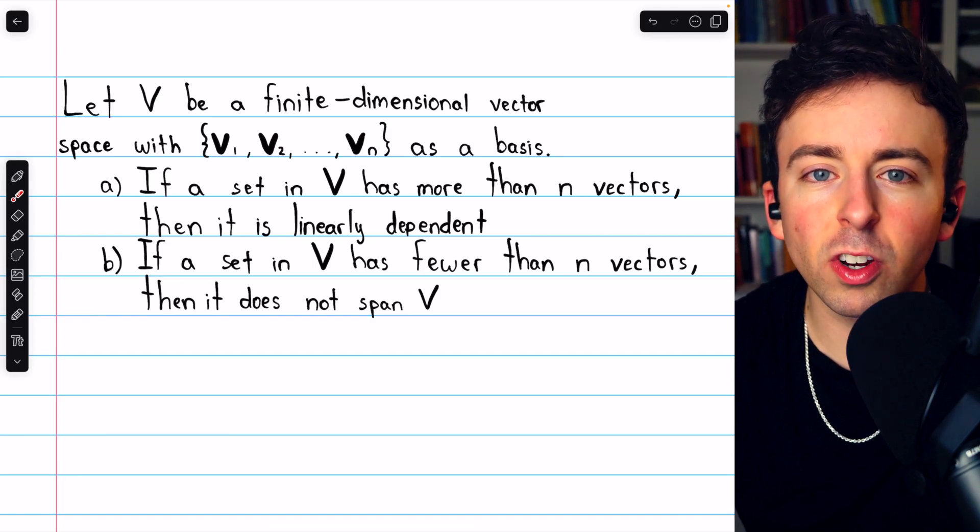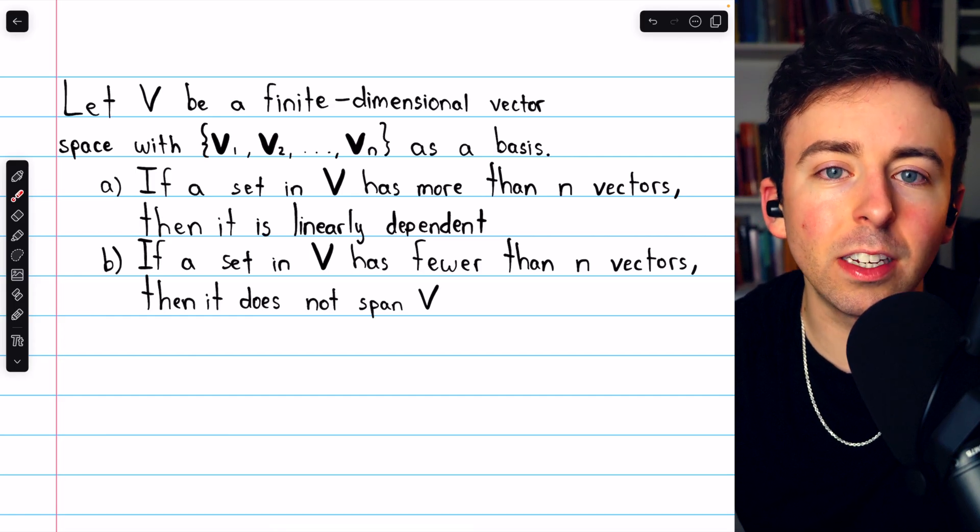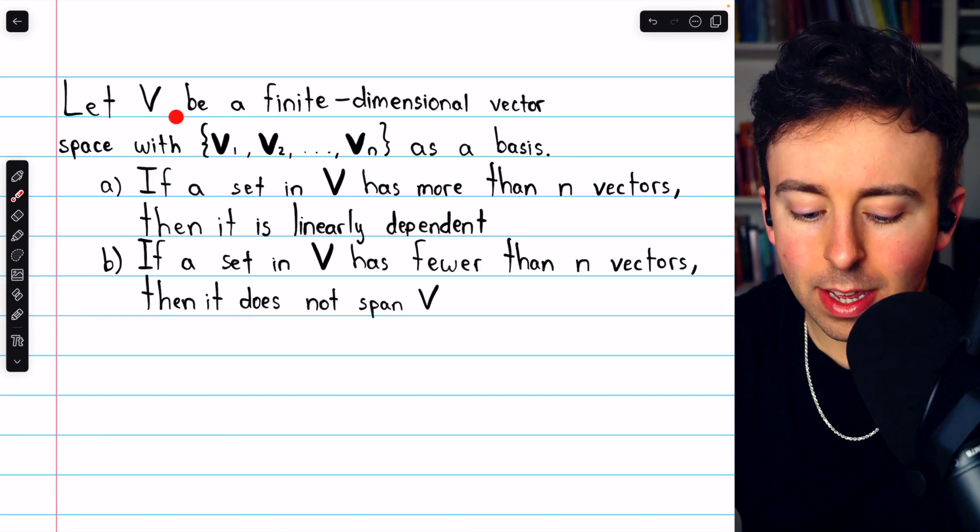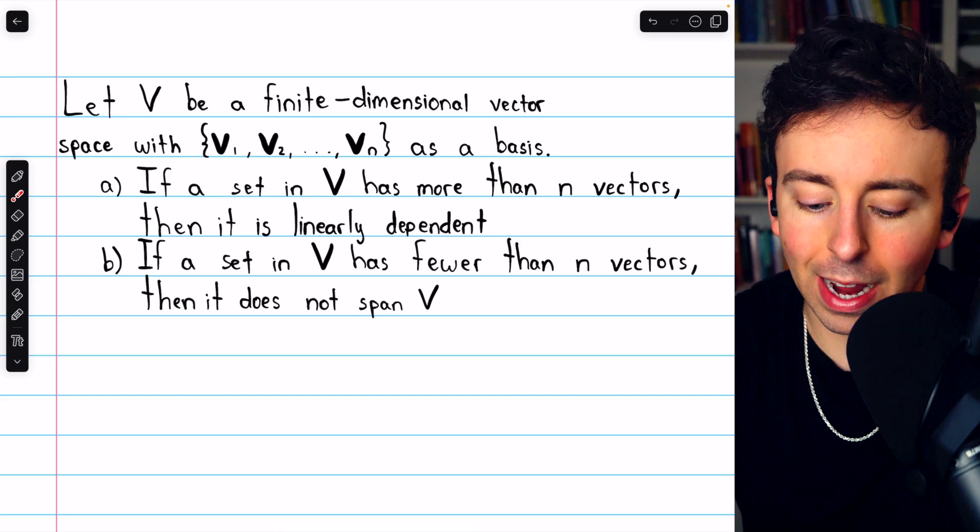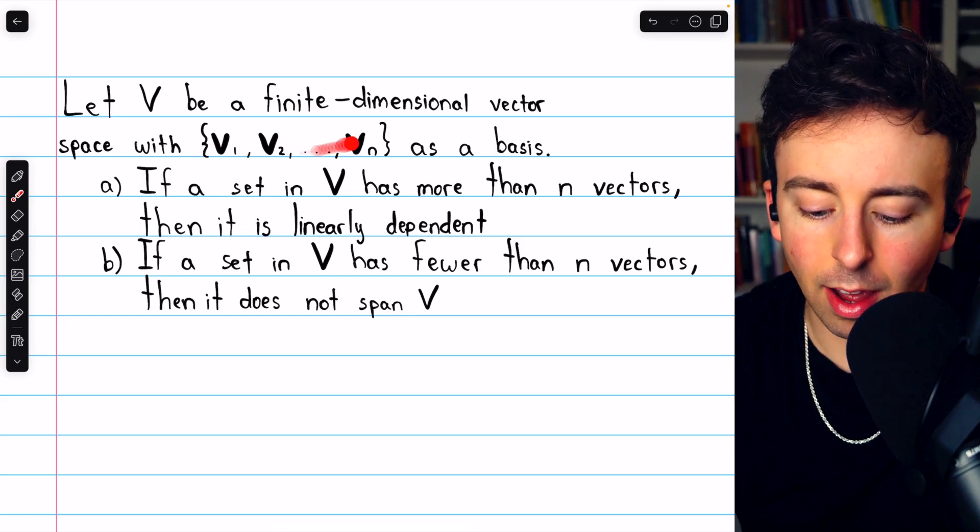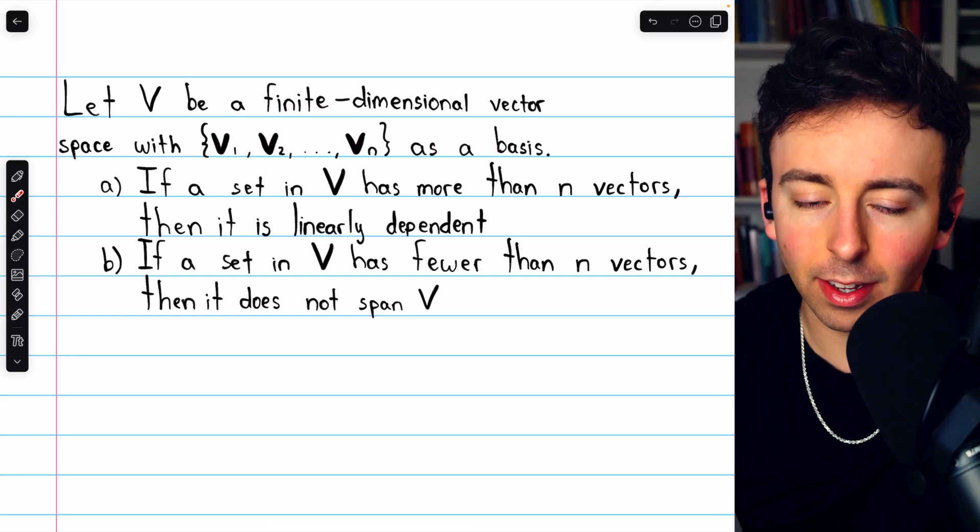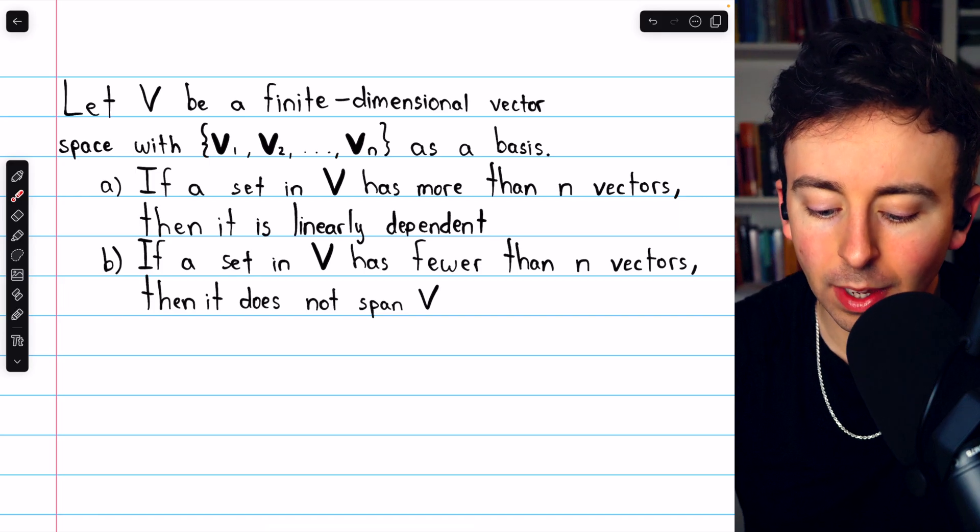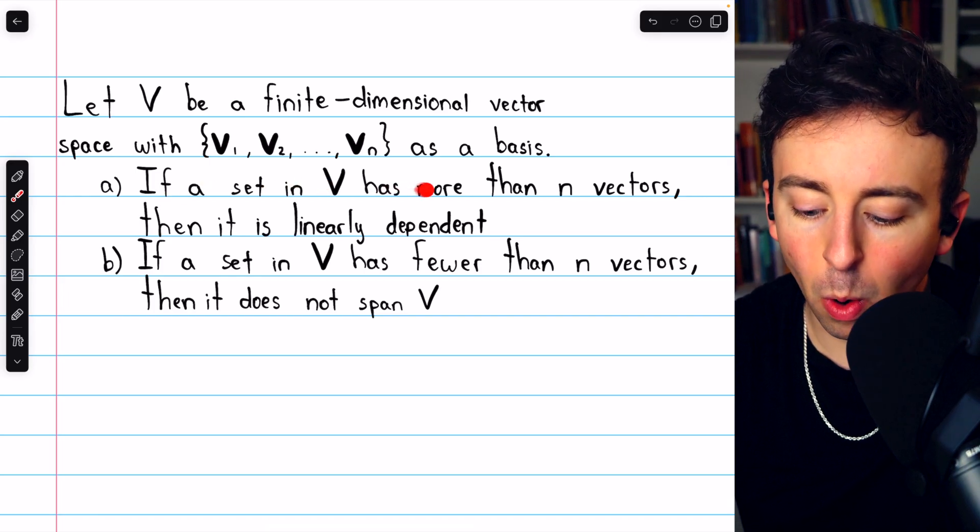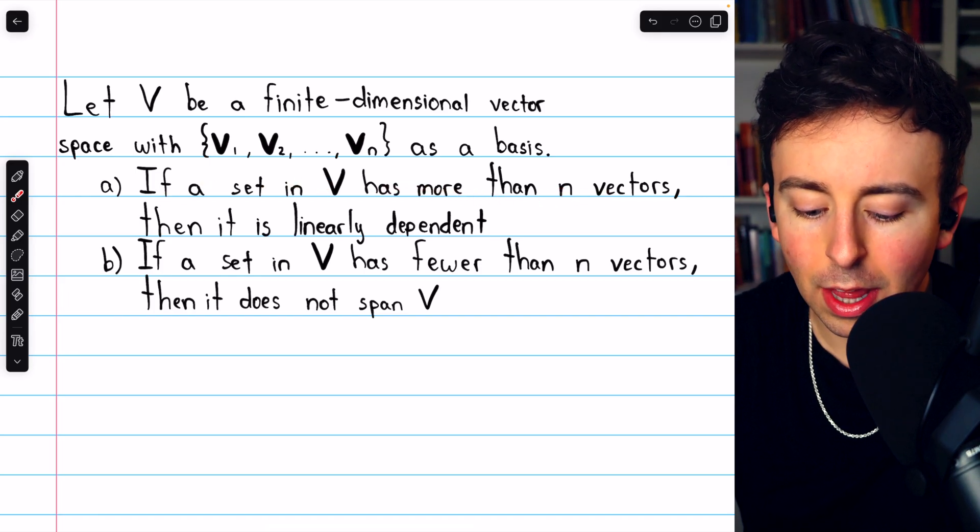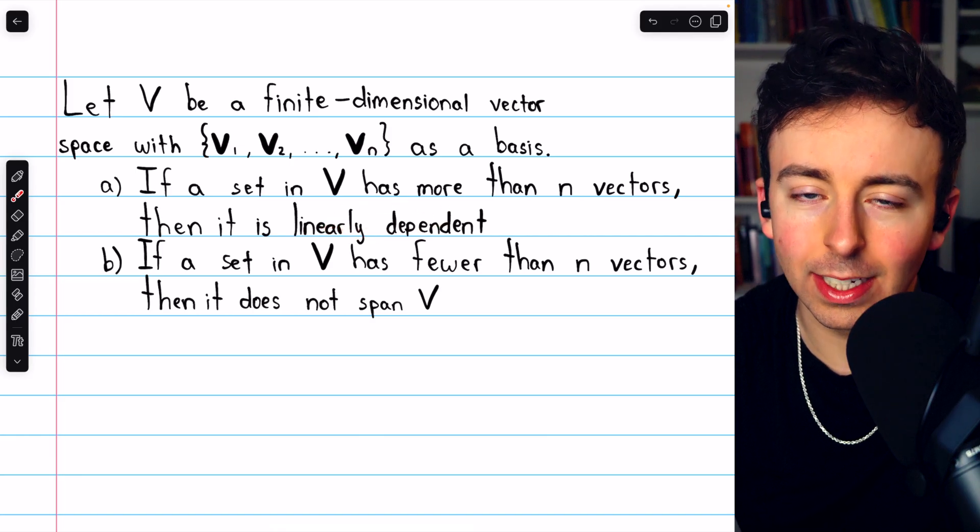Before we see the definition of dimension, there are a couple quick facts we need to be aware of. If V is a finite-dimensional vector space with a set of n vectors as a basis, then firstly, if a set in V has more than n vectors, that set must be linearly dependent.